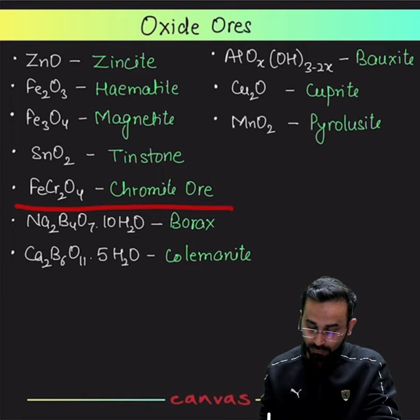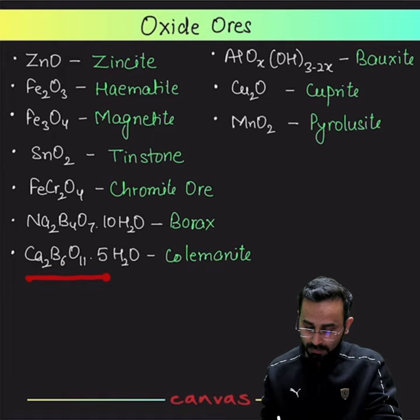FeCr2O4 Chromite Ore, Na2B4O7·10H2O Borax — there are 4 borate units, Ca2B6O11·5H2O Colemanite.